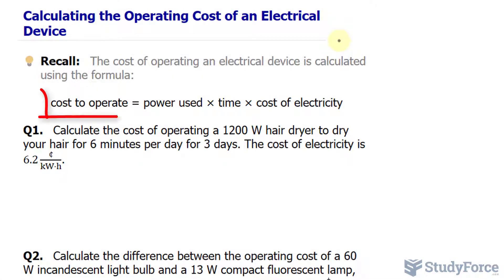Let's begin by analyzing the formula that's been provided. The cost to operate a device is equal to the power used, the power that the device requires, in this case it's 1200 watts, times the time that you use it times the cost of electricity.